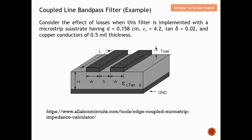Now we need to describe the characteristics of the microstrip line and consider the effect of loss when this filter is implemented. The substrate has a thickness of 0.158 cm, a relative permittivity εr of 4.2, a loss tangent of 0.02, and a copper conductor thickness of 0.5 μm. After defining these substrate parameters, we are ready to find the width and gap of the coupled line.